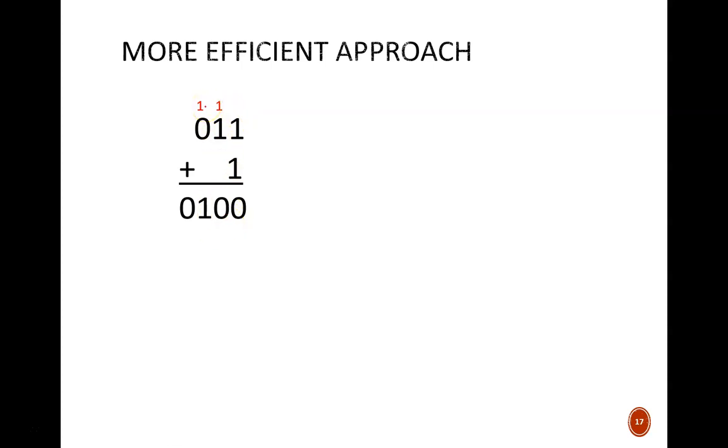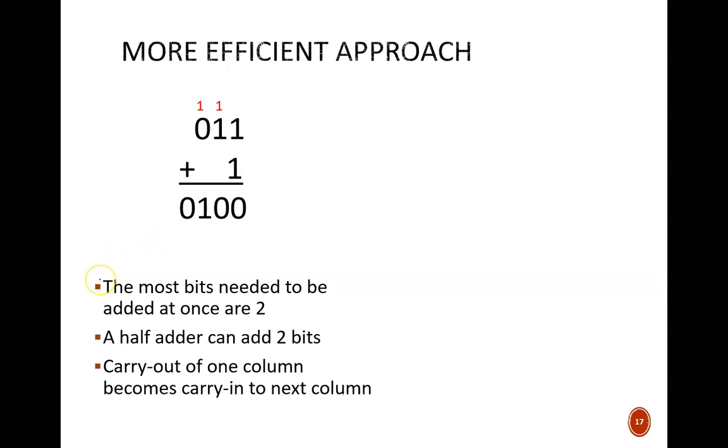In the last column, the carry in of 1 is added to the given 0, which yields a sum of 1, with a carry of 0. What can we learn from this?